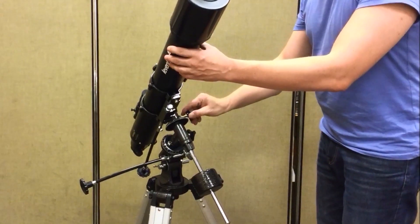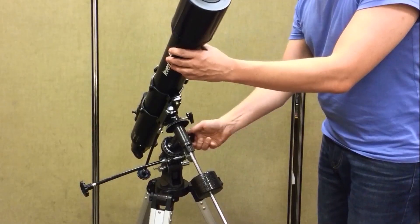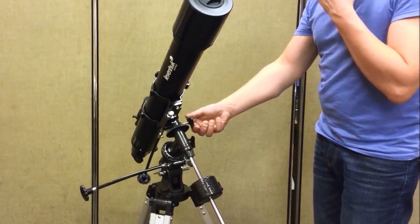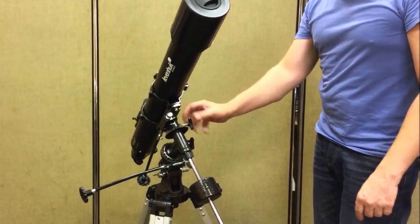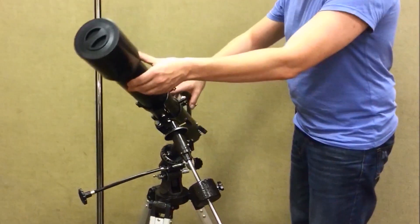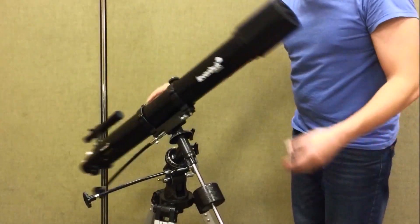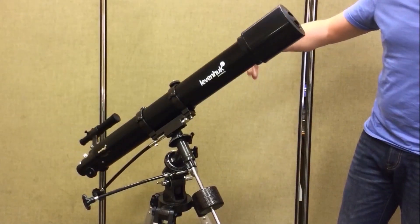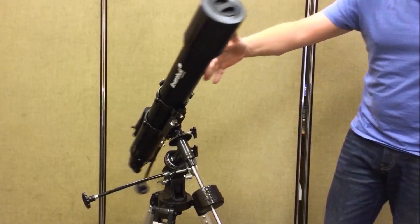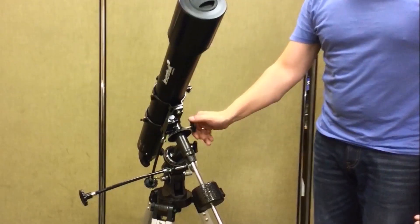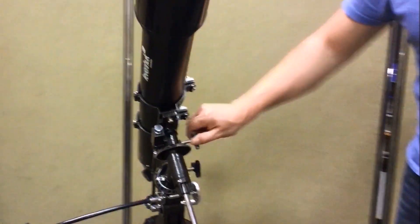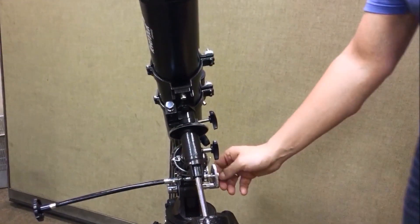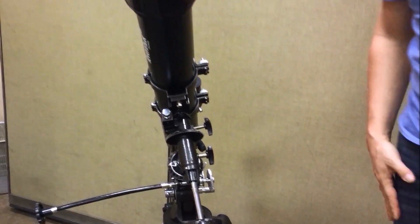Tighten the declination axis lock knob. Now we are ready to balance the telescope in the RA axis. Unlock the RA lock knob. Check if the telescope is properly balanced. If it's not, loosen the ring clamps and move the telescope tube back and forward until the telescope is balanced. Tighten the RA lock knob. These two knobs should always be securely tightened.